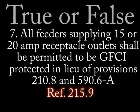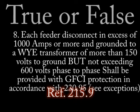Number 7: True or false — All feeders supplying 15 and 20 amp receptacle outlets shall be permitted to be GFI protected in lieu of provisions 210.8 and 590.6-A.